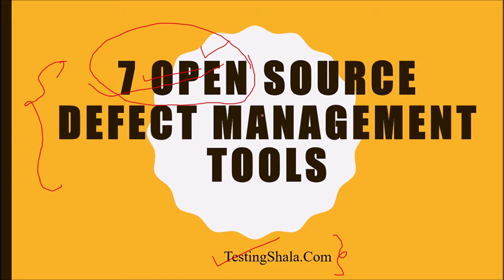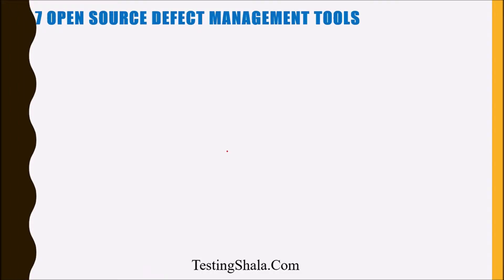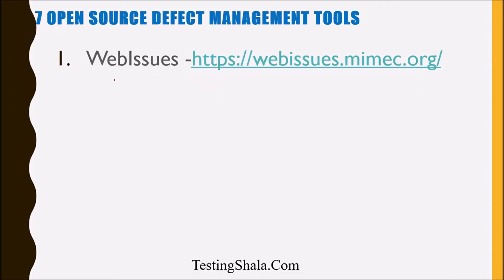So let's move on to understand which are those seven important open source defect management tools that you can easily use in your project to track the defects or bugs. The first defect management tool which is open source is Web Issues. You can find out more information from this website.